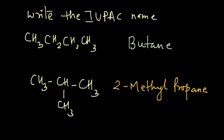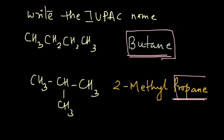After you write the names, look at the last part of each name. In butane there is only one word — butane — and in the second compound the last word is propane. If these two are different, then you have chain isomers, because this part tells us the name of the parent chain. So if the parent chains are different, the names will be different and you will have chain isomers; if they are the same, they are not chain isomers.